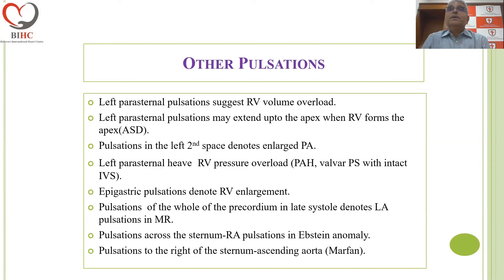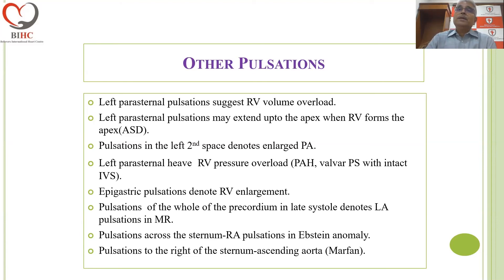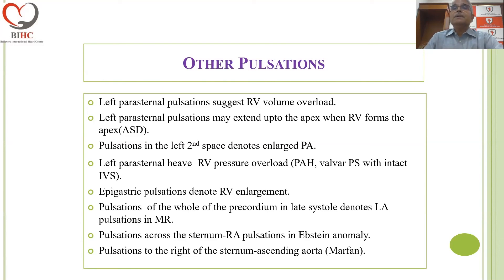Left parasternal pulsations are a feature of RV volume overload and may extend to the apex when the RV forms the apex. Pulsations in the second space, visible or palpable, denote an enlarged pulmonary artery. Left parasternal heave suggests right ventricular pressure overload. Epigastric pulsations denote RV enlargement. The entire precordium may pulsate in systole with mitral regurgitation. Pulsations may be seen across the sternum in Ebstein's anomaly from the right atrium. Systolic pulsations to the right of the sternum are seen in ascending aortic aneurysm, as in Marfan syndrome.